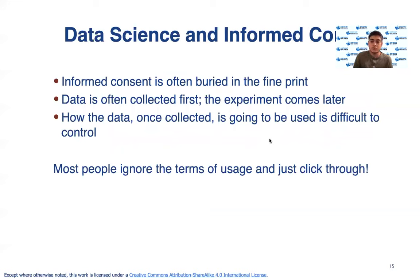Informed consent is often not treated as well as it should be — it's frequently buried in the fine print of lengthy terms and conditions pages that people tend to ignore. When downloading an application, people typically just skip through, agree, and move on. This is often how informed consent is obtained without people actually being informed. Key concerns include: consent buried in fine print, data often being collected before experiments are designed, and very limited ability to control how collected data will be used.